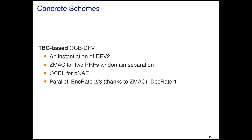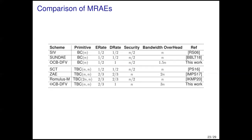In the same manner as OCB-DFB, we build ThetaCB-DFB by using ZMAC for PRF and ThetaCBL for plain nonce-based AE. Thanks to ZMAC, which processes two input blocks per call, the encryption rate becomes 2/3 and the decryption rate is 1. This slide shows a comparison of our proposals and other SIV-based MRAE schemes. OCB-DFB and ThetaCB-DFB have the encryption rate identical to the best previous schemes while achieving decryption rate 1.